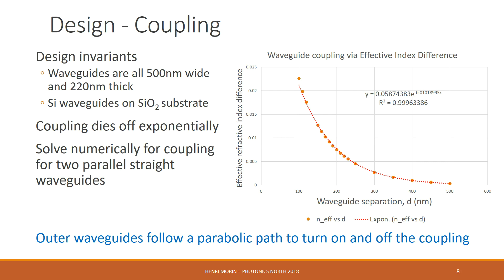This is precisely what we have on the plot. The x-axis is the waveguide separation, and the y-axis is effective refractive index difference, and as we can see, it does follow an exponential trend. Therefore, in order to turn on and off the coupling, the outer waveguides follow a parabolic path.